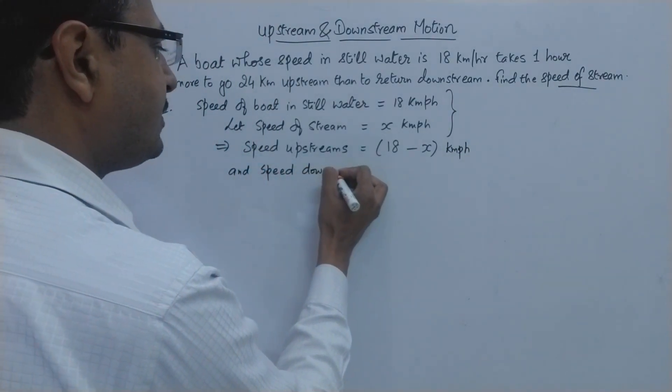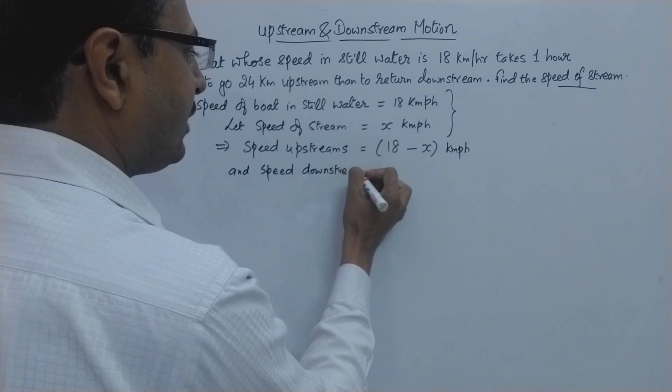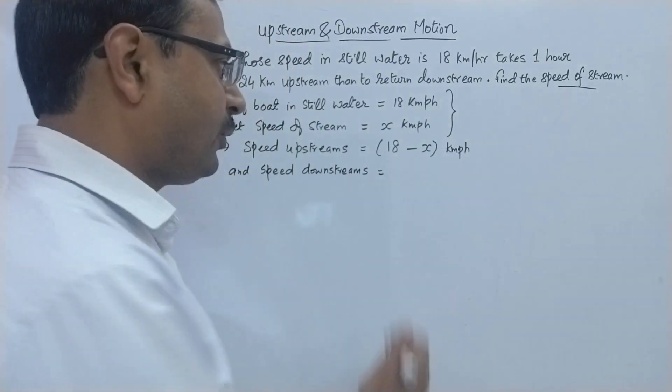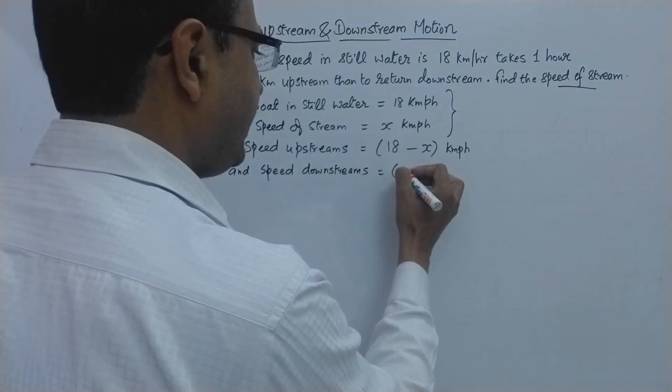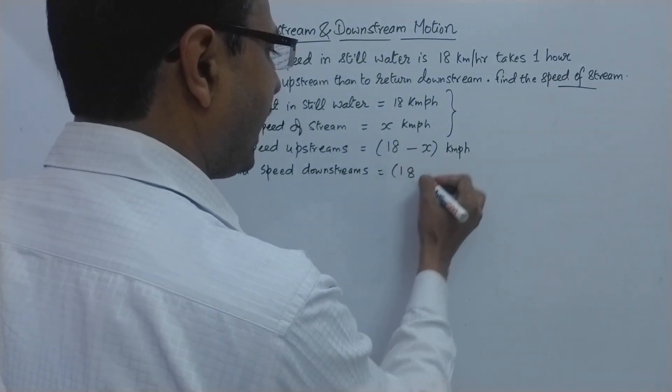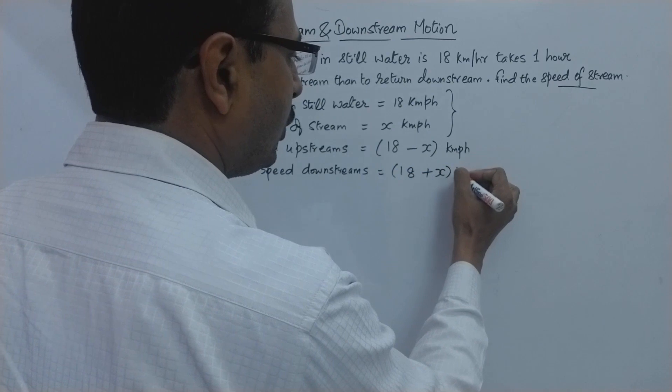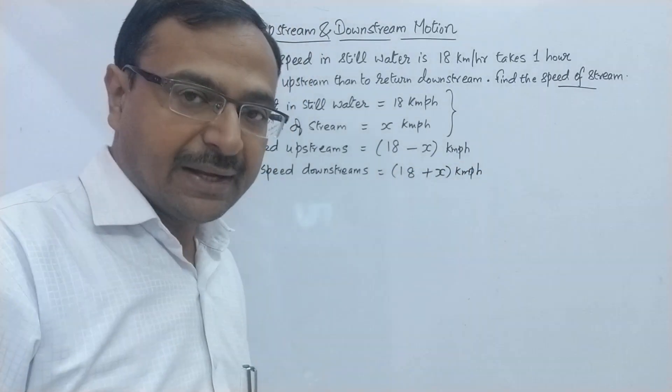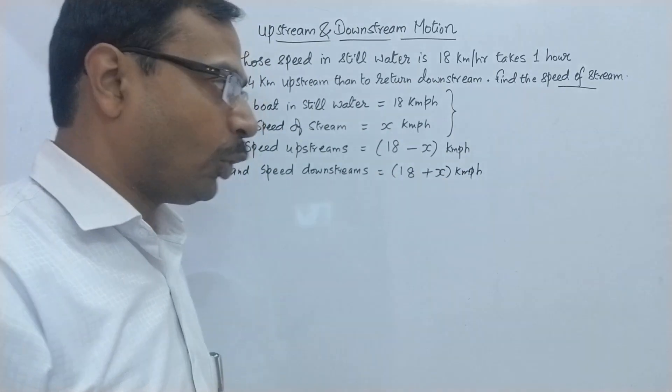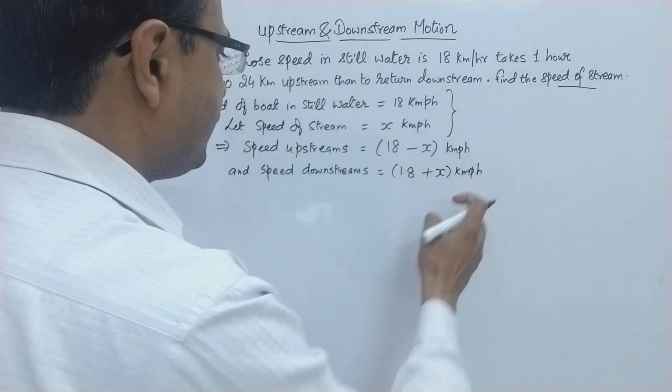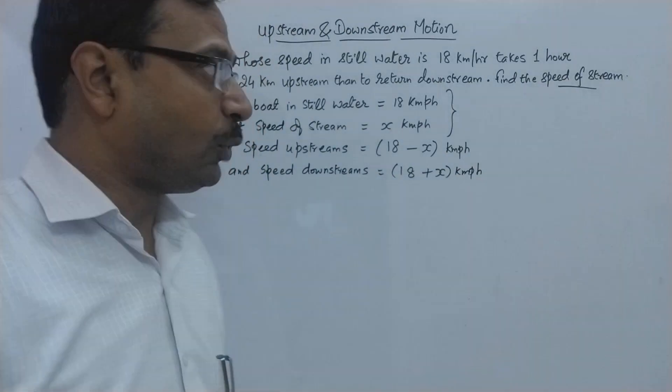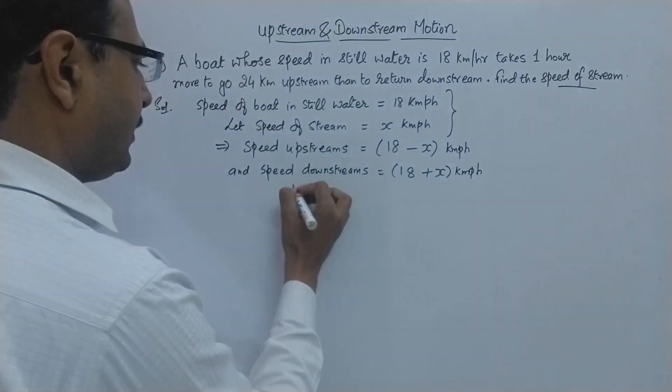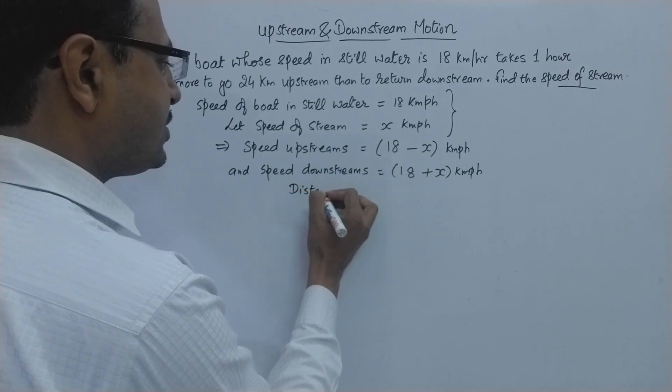And when it moves downstream, speed downstream obviously when it moves downstream it is moving along with the flow of the river. Therefore the speed of boat in still water and the speed of stream both of them get added together to give the net resultant speed of the boat. So these are the two speeds which will be used because the boat is either moving upstream or it is moving downstream.